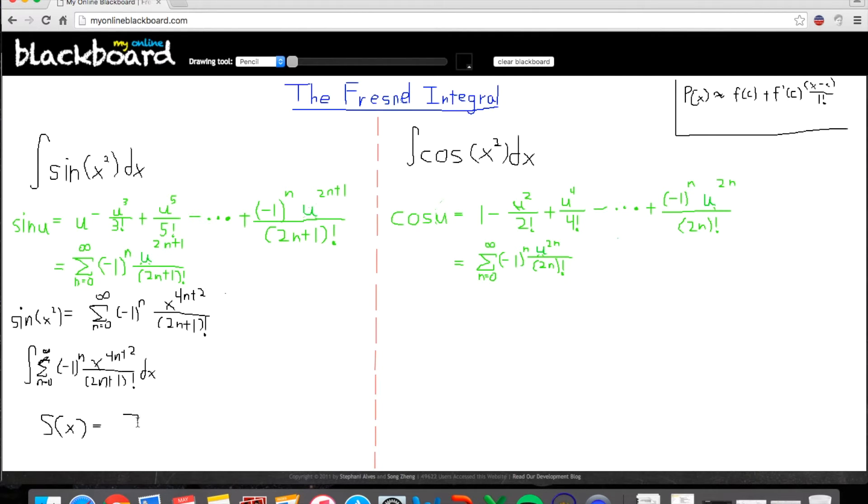So, knowing that, we get that our final answer, or the Fresnel integral for sine x squared, is the summation from n, that's a much better summation sign, n equals 0 to infinity, and then we get, it's still an alternating series, of course, so, negative 1 to the n, and then we have the fraction of x to the 4n plus 3, all over 2n plus 1 factorial.